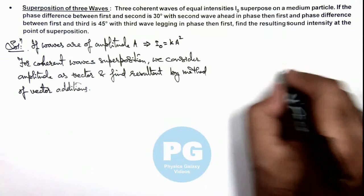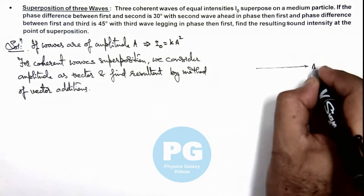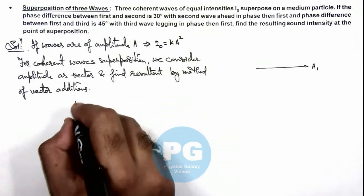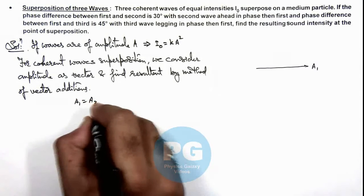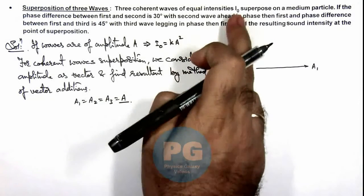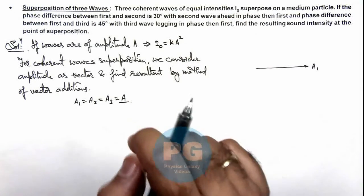We are given that the first wave is having an amplitude—here we represent amplitude as A₁, however the values of A₁ equals A₂ equals A₃ equals A, as we are considering these waves are of equal intensities.